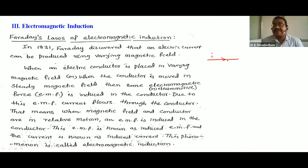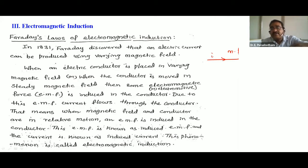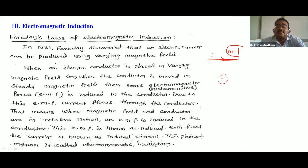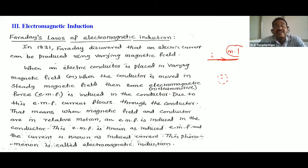The current flowing through a conductor produces a magnetic field around the conductor. If the charge is moving, it produces a magnetic field. When an electric conductor is placed in a varying magnetic field, or when the conductor is moved in a steady magnetic field, some electromagnetic force is induced in the conductor.